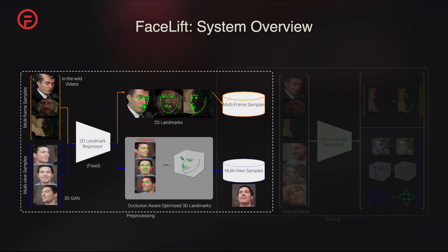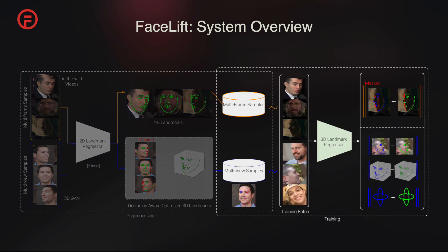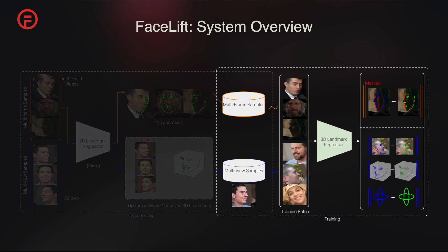Our system starts with preprocessing in-the-wild videos from the Celeb V dataset for 2D landmark detection, followed by sampling from the 3D GAN, detecting 2D landmarks, and optimizing 3D landmarks for a set of multi-view GAN samples. We then combine data from both the video and GAN sources during training to enhance the robustness of our model. We mask the 2D video branch's loss via a visibility mask computed from the model's predicted pose.